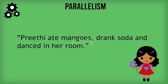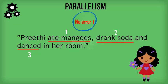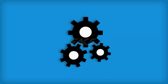Preeti ate mangoes, drank soda and danced in her room. Is this sentence correct? Here, all the three items — ate mangoes, drank soda and danced — are of the same grammatical structure. Hence, this sentence has no parallelism error. Let us look at another simple example.